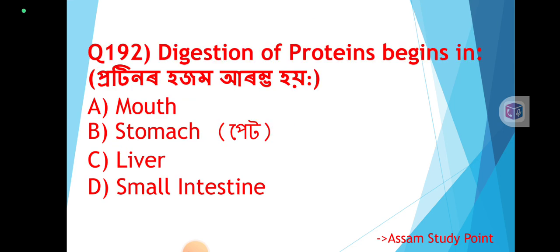Question 192: Digestion of proteins begins in — proteins or hajam arampha hoy — where does protein digestion begin? The correct answer is Option B: Stomach (Stomak/Pet).